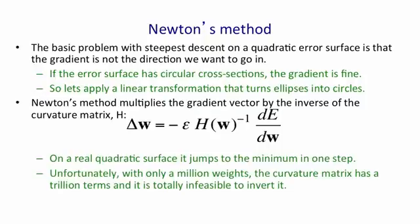The problem with this is that even if we only have a million weights in our neural network, the curvature matrix, the Hessian, will have a trillion terms. It's completely infeasible to invert it.